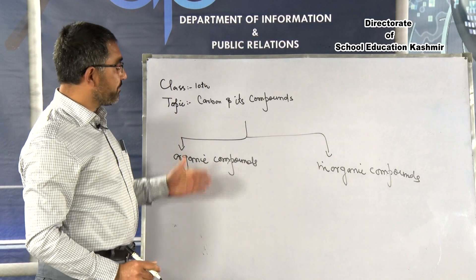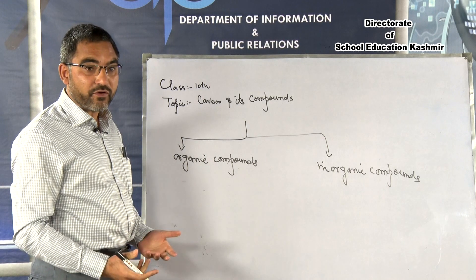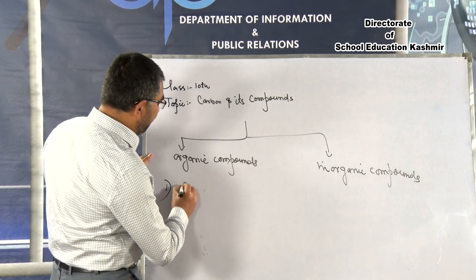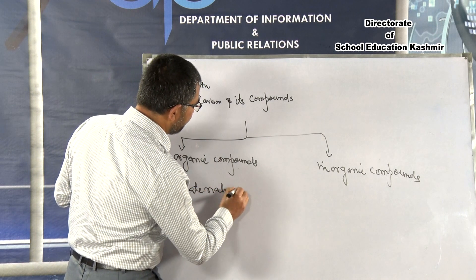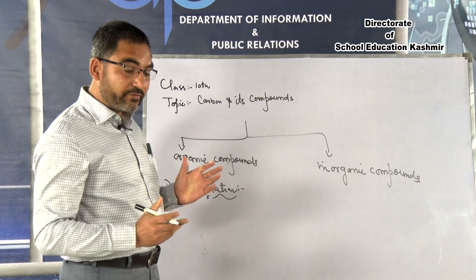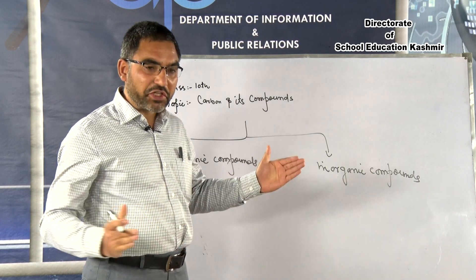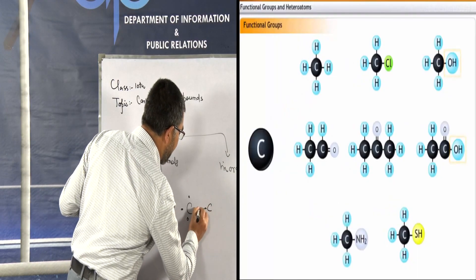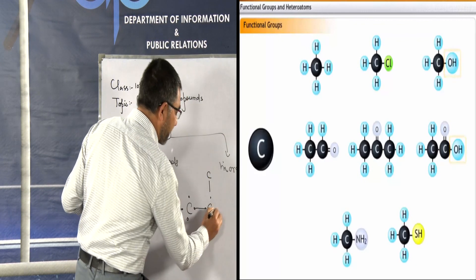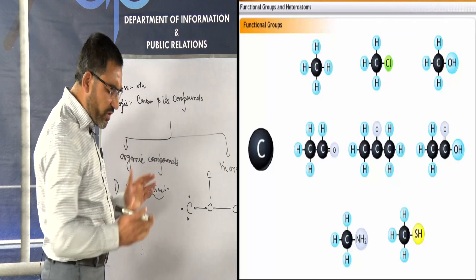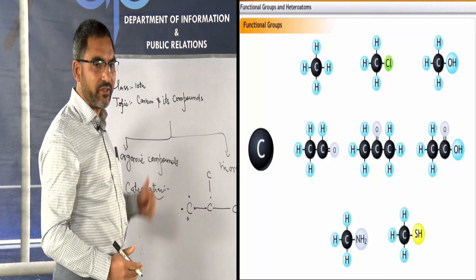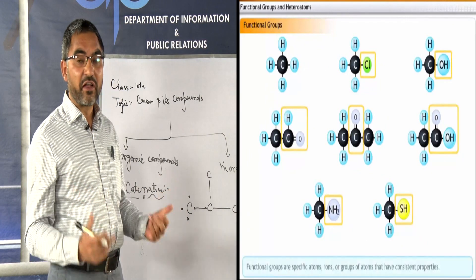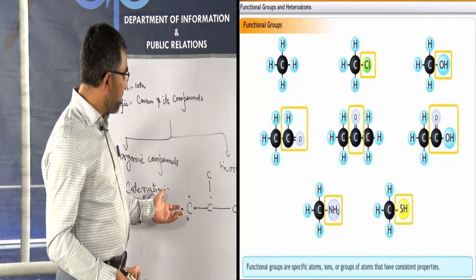Before taking up organic compounds, let us understand why Carbon forms such a huge number of compounds. There are two reasons. The first reason is Catenation. Because of its valency, Carbon links with other Carbon atoms forming long chains — one carbon links with a second, a third, and so on. Linking of carbon with other carbons and with other elements of the periodic table like oxygen, nitrogen, and phosphorus is called Catenation.